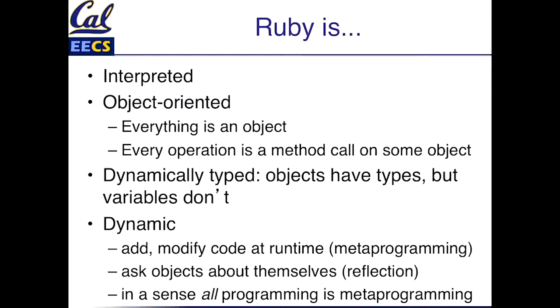So let's start with just a laundry list. What is Ruby? It's an interpreted language, so you don't compile it and run it. It's object-oriented and, as we'll see, it takes object orientation to a whole new level beyond what many of you are probably accustomed to, because everything in the language - even like an integer - is a real object. And the only way anything gets done in this language is you call methods on objects. It seems a little bit weird, but once you get used to it, it's a very powerful, simplifying principle.